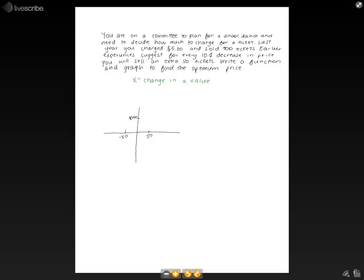Because as you see in the problem, it tells us that we are going to have a 10 cent decrease, and then we will have an increase in 50 tickets. So we suspect we are going to need to change the dollar amount and change the tickets.